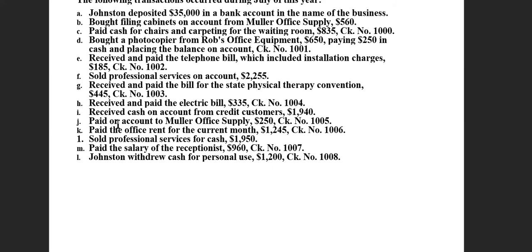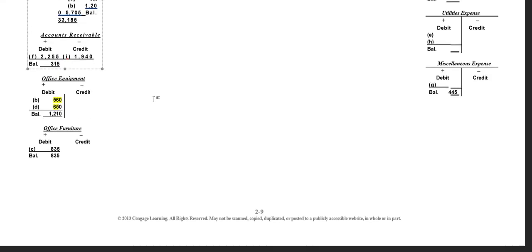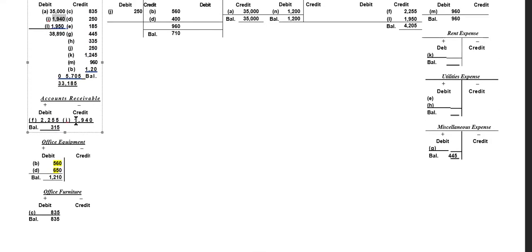We received cash on account from a customer — $1,940. Note that we are not providing any service; we already provided the service and are now receiving money applied against the customer's account. We record an increase in cash by debiting cash $1,940, and we reduce the customer's accounts receivable by crediting accounts receivable $1,940.